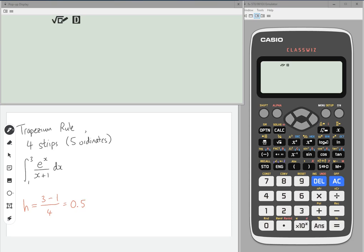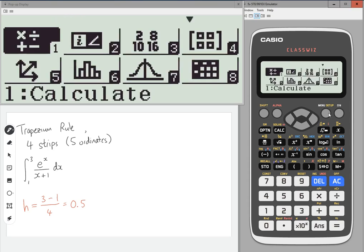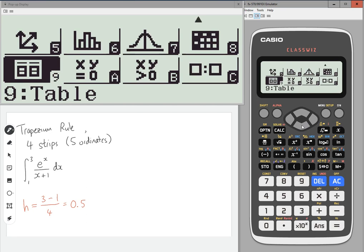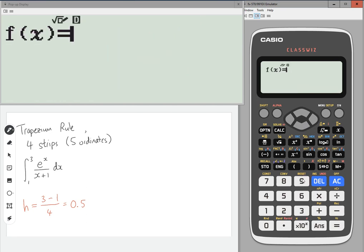That's going to be your step length using the table function. Go to menu and scroll down until you hit number nine, table. Now in f of x we're going to type in the function, so use the fraction button, then e to the x, then right, and then right again to go in the bottom for the denominator, x plus one, then press equals.